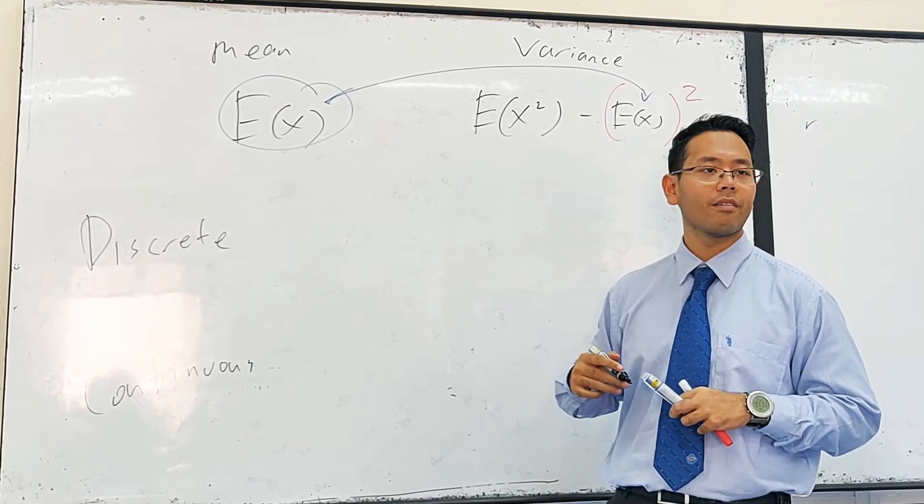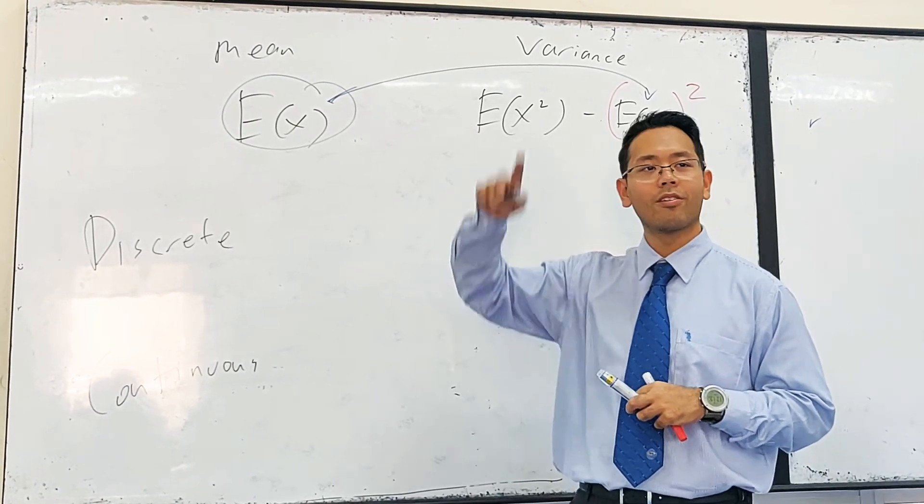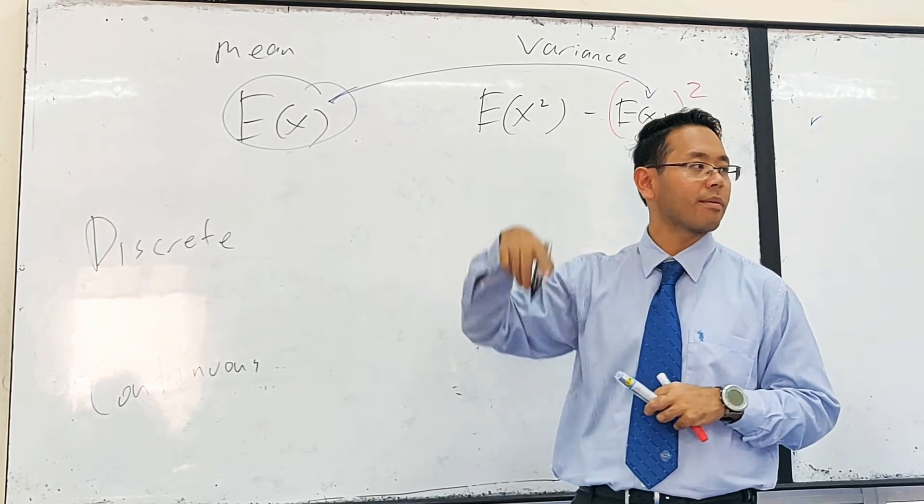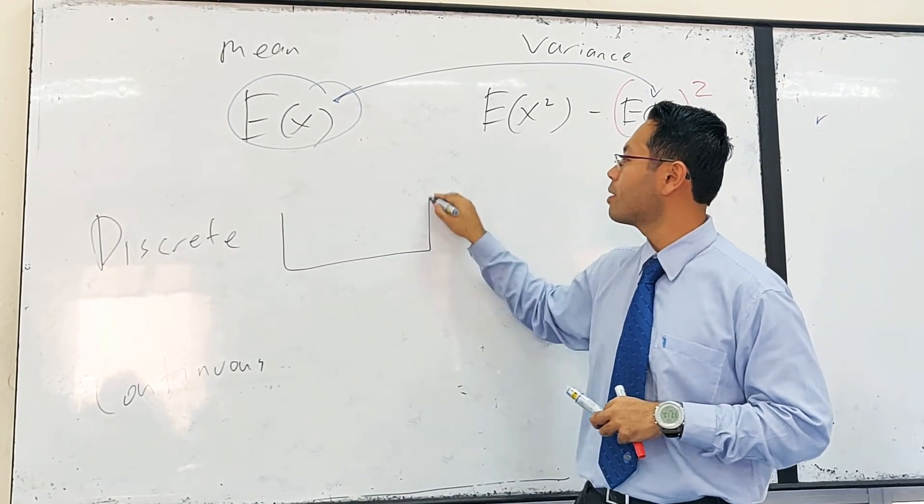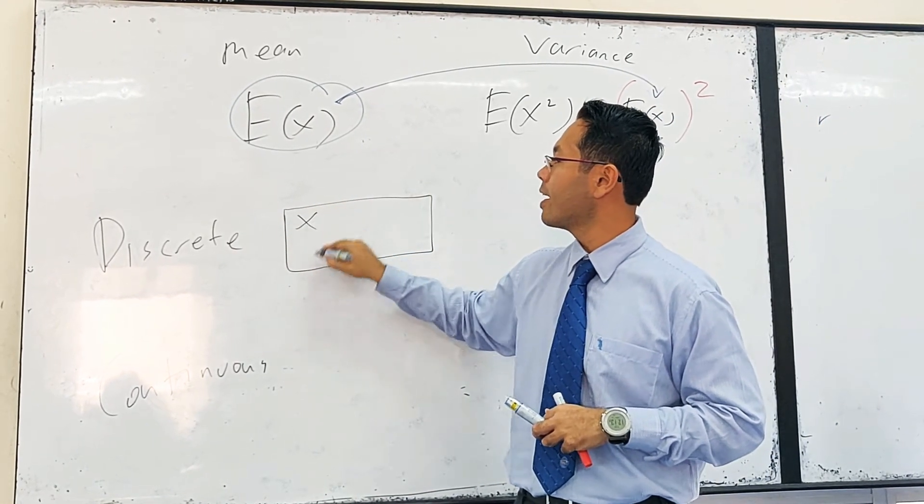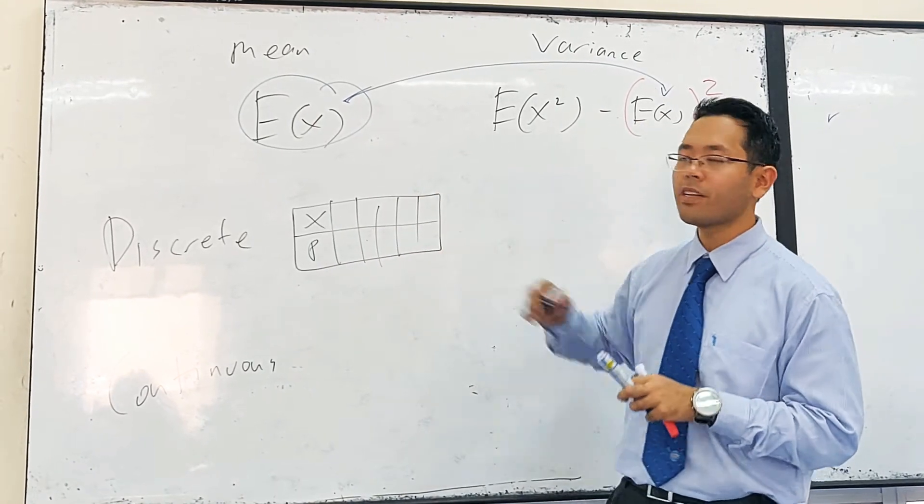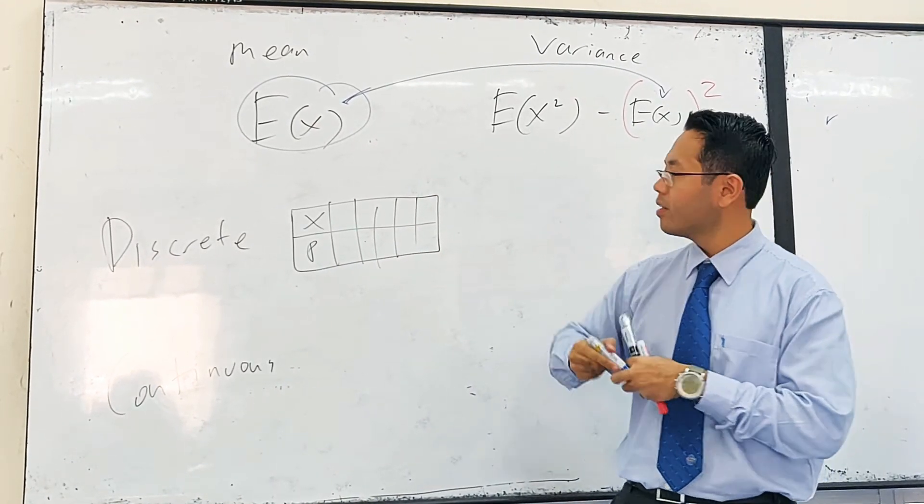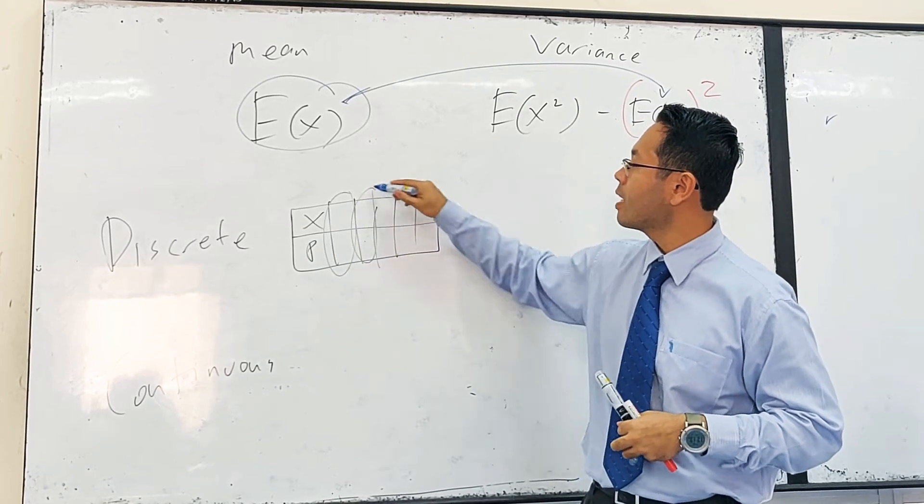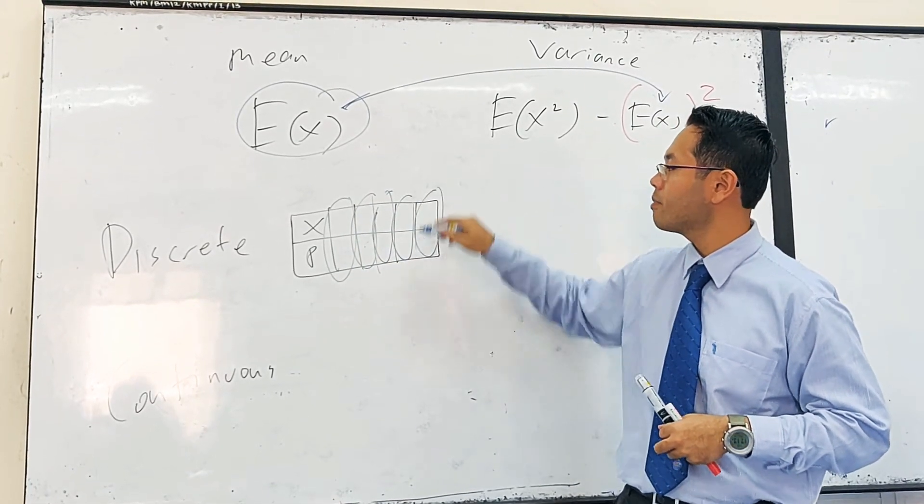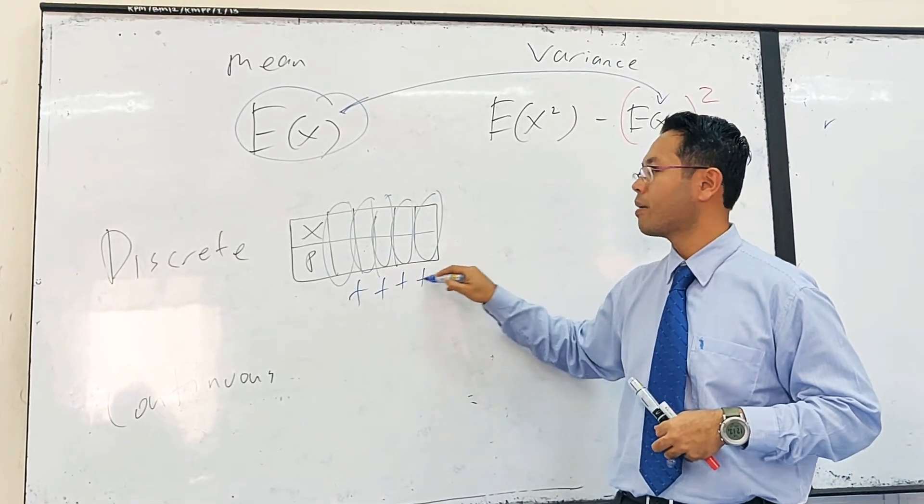What's the method? Times, times, times, times, and then you add them up. So if I give you something like this, if I give you the x and the probability, how do you find mean? Times, times, times, times, and then you add them up. Okay?